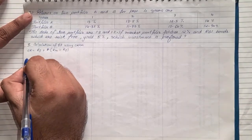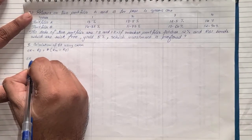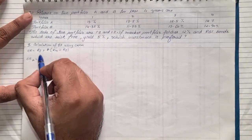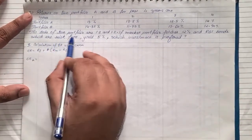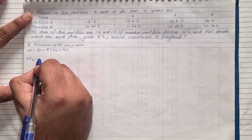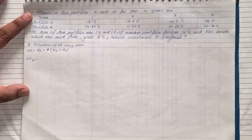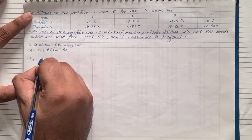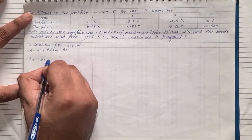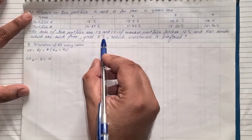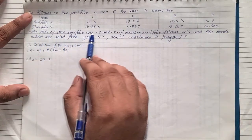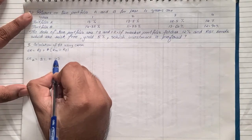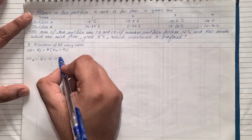For portfolio A, the expected return equals the risk-free return, which is given as the RBI bond rate of five percent, plus beta. The beta for portfolio A is 1.3, so we take that value.